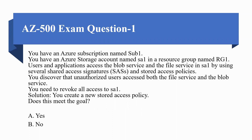Coming to question number one: you have an Azure subscription named Sub1 and an Azure storage account named SA1 in a resource group named RG. Users and applications access the blob service and file service in SA1 by using several shared access signatures and stored access policies. You discover that an unauthorized user accessed both the file service and the blob service. You need to revoke all access to SA1, and the solution provided is: you create a new stored access policy.